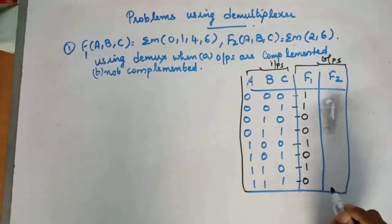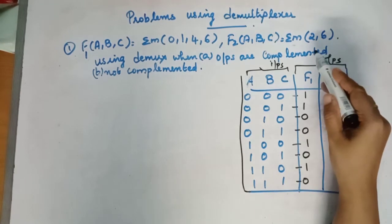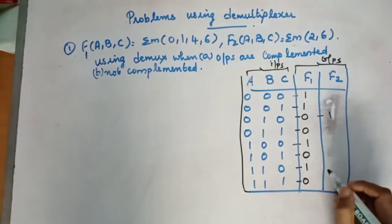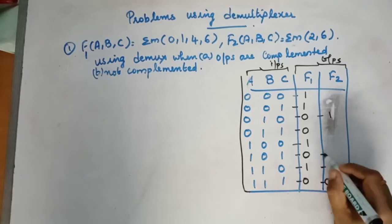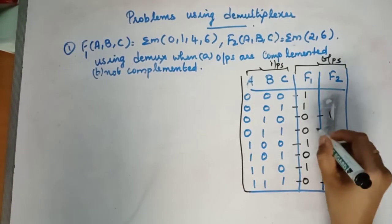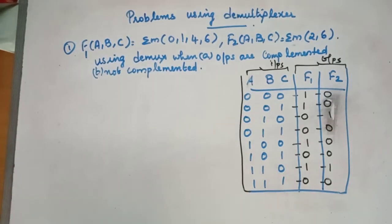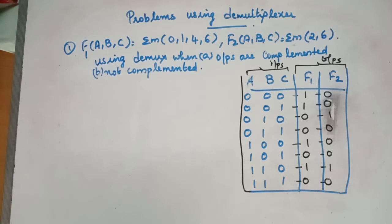This is a normal SOP relation. F2 is 1 when ABC corresponds to minterms 2 and 6; in all other cases the output is 0. So that much we get from the question. Now, which demultiplexer will be used in this case? There are three select lines, meaning the number of output lines will be 2 raised to 3, that is 8, with 1 input. So it will be a 1-by-8 demultiplexer.